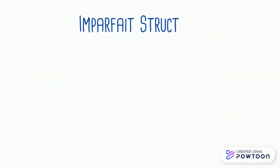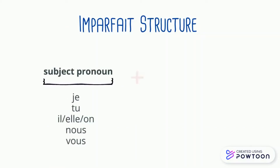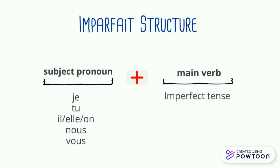The imparfait is structured a little bit differently. It consists of the subject pronoun followed by the main verb, which is conjugated according to the subject pronoun in the imperfect tense.